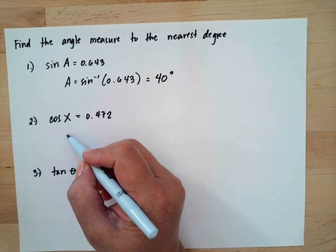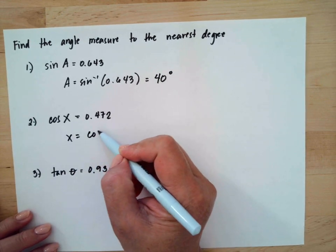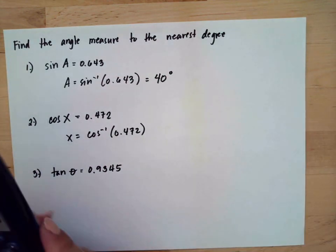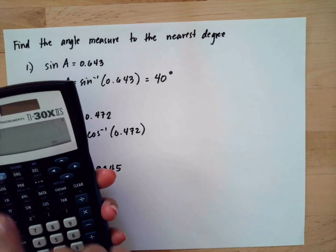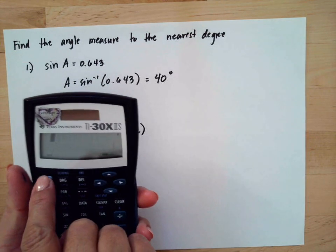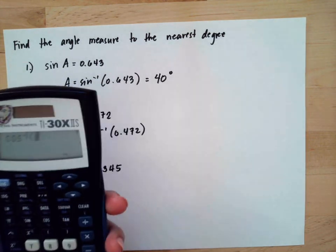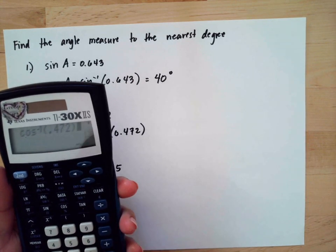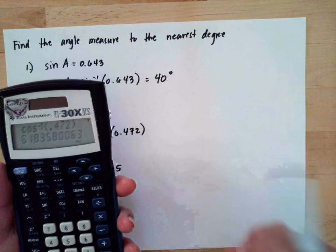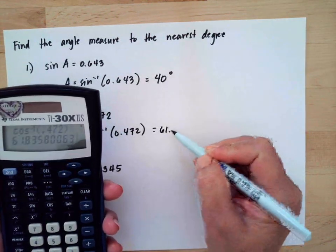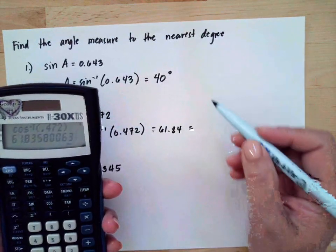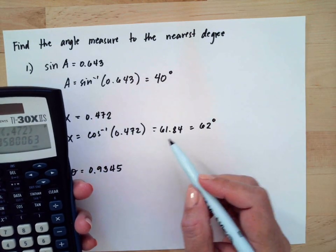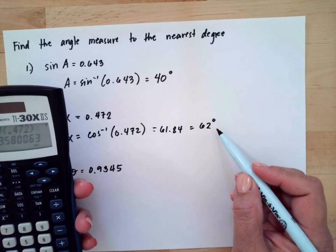Then this problem: you will also do the inverse using the calculator. Press second, then cosine, and type 0.472. It will be 61.84, and rounded to the nearest degree it will be 62 degrees, because 61.84 is nearer to 62 than to 61.